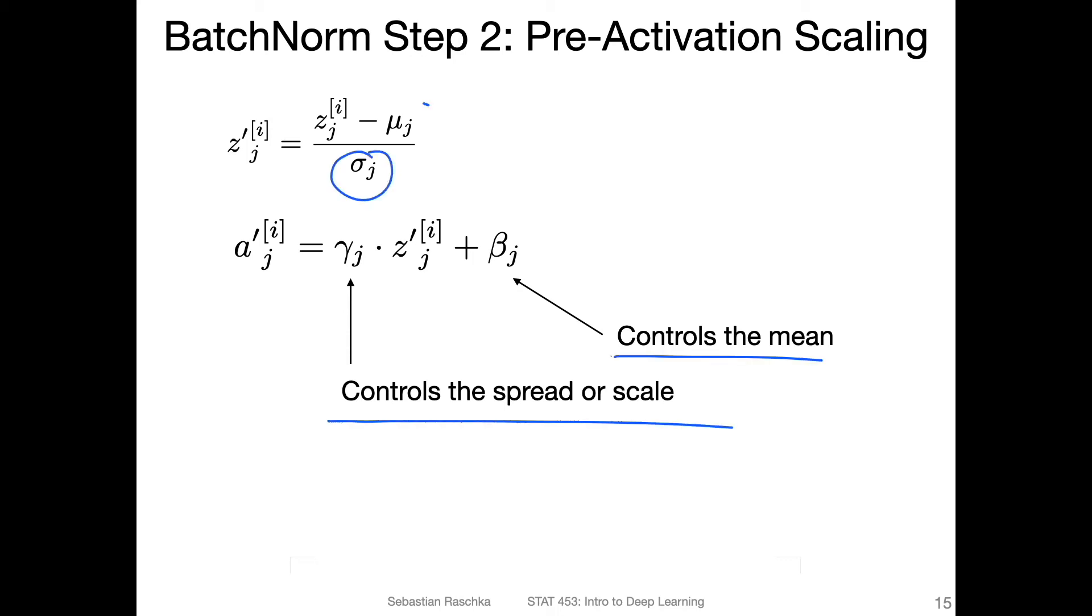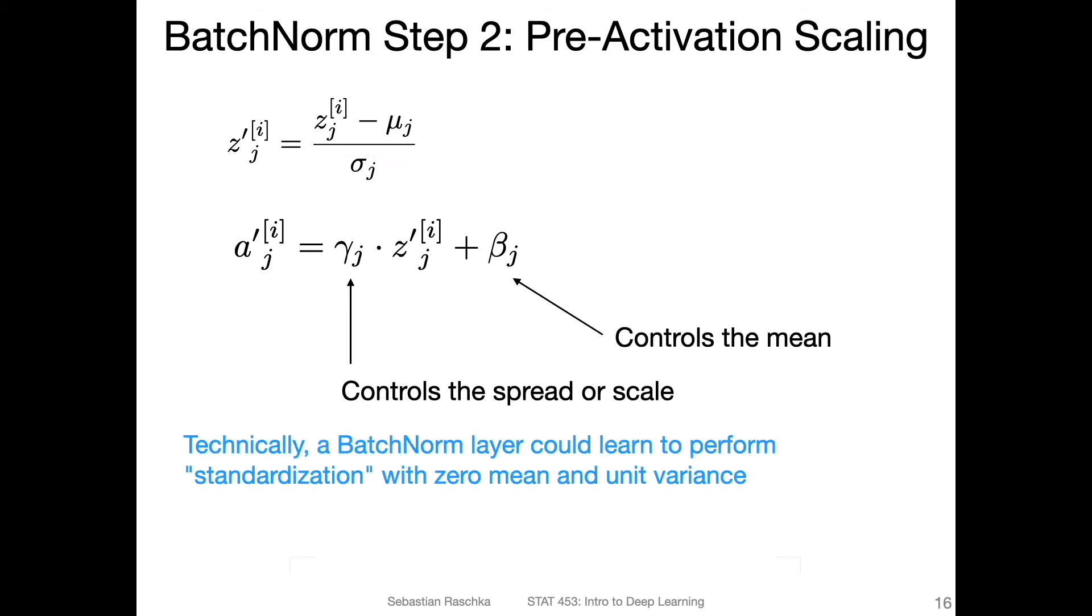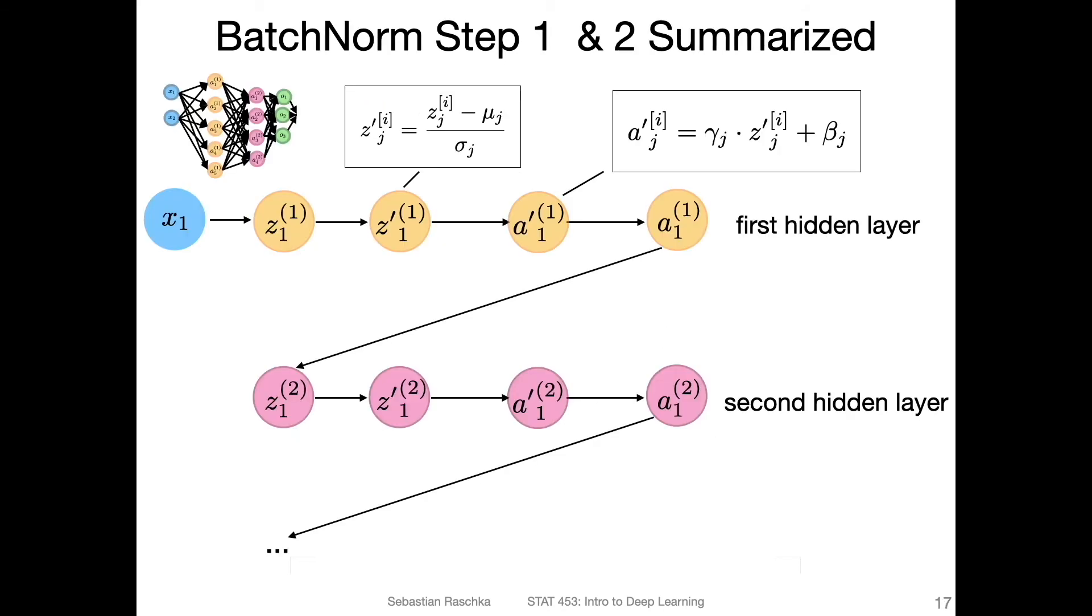So this controls the mean and this controls the spread or scale. Technically a batch norm could learn to perform standardization with zero mean and unit variance if these are the same and these are the same.